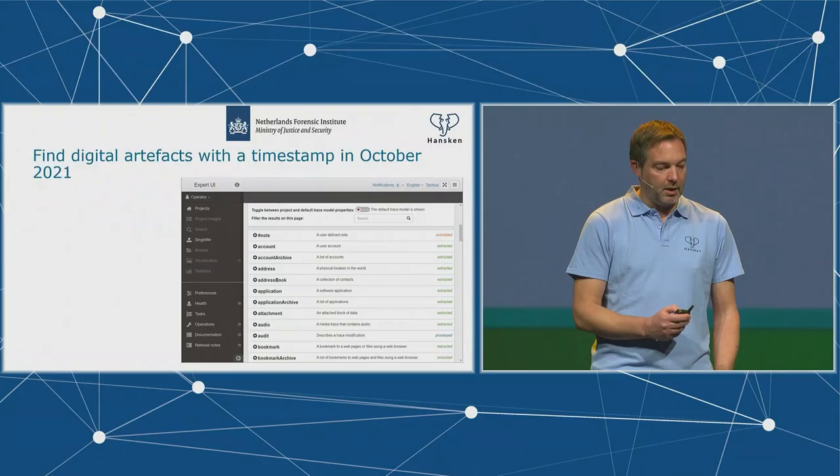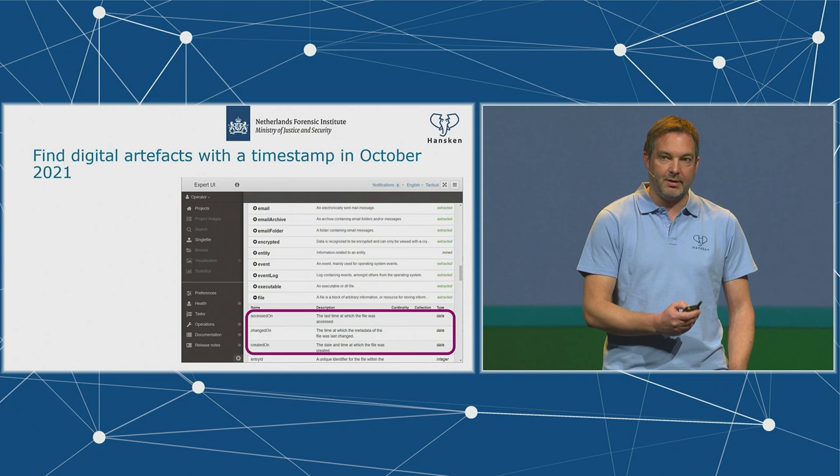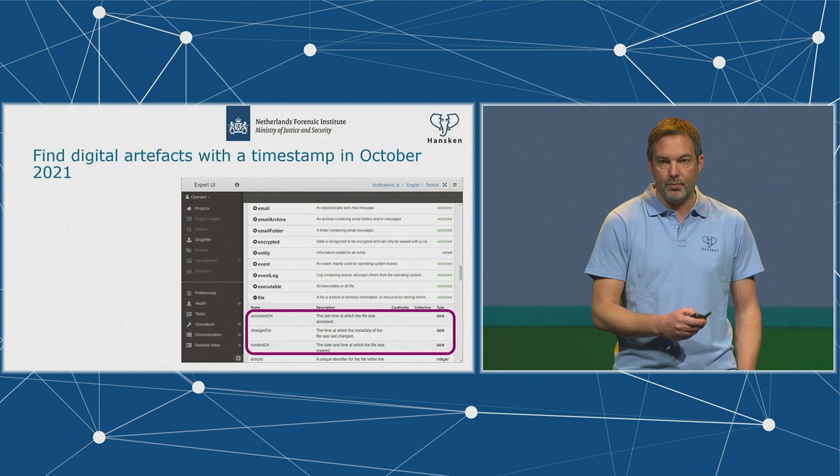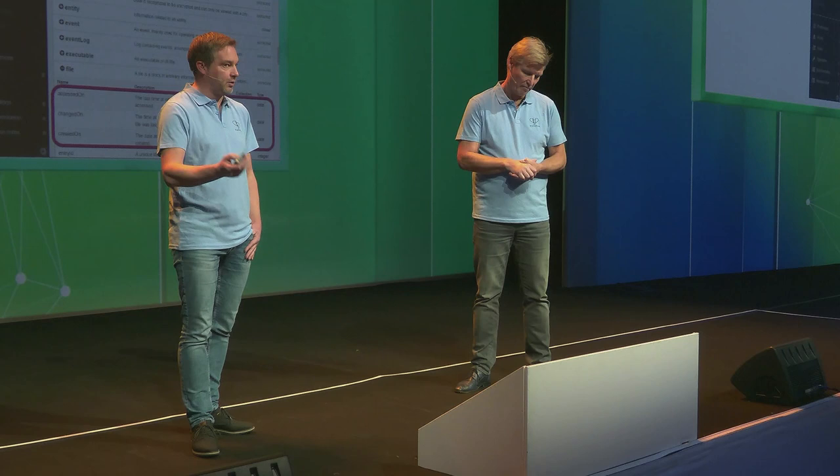Let's dive in. First query: find digital artifacts with a timestamp in October 2021. Hansken has a trace model — we type everything, and a lot of these properties are of type date and time. We know when a file was created, when an email was sent, when a document was printed. You can search on specific things, like all files created in 2021, but you can also combine them and query all dates known within a trace, independent of whether it's a file timestamp or an email timestamp.